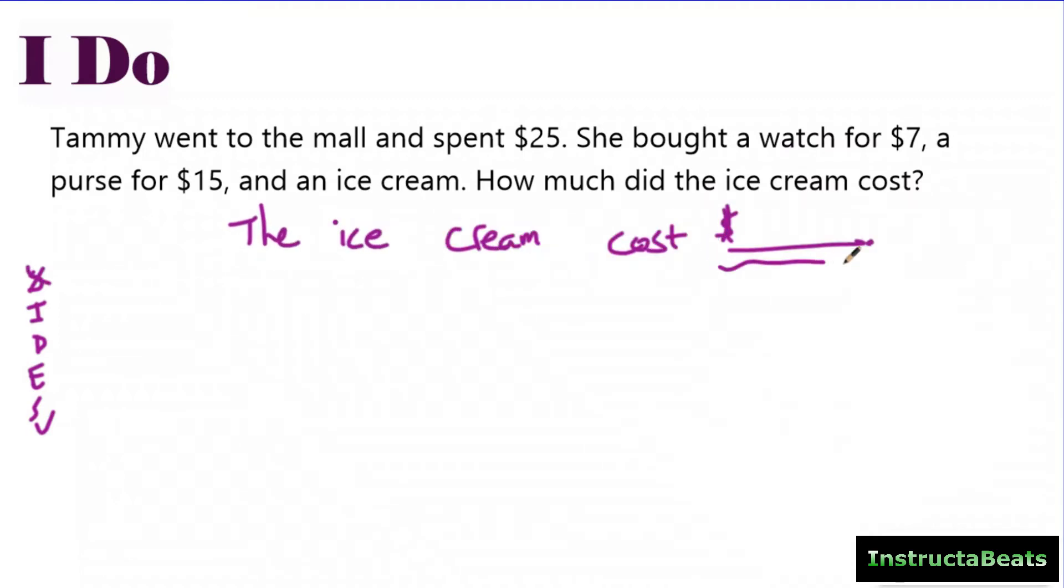So now I want to go back. I want to identify anything about money and anything about ice cream. My statement allows me to figure out what's important. So Tammy went to the mall and spent $25. I'm circling that because it's about my statement.